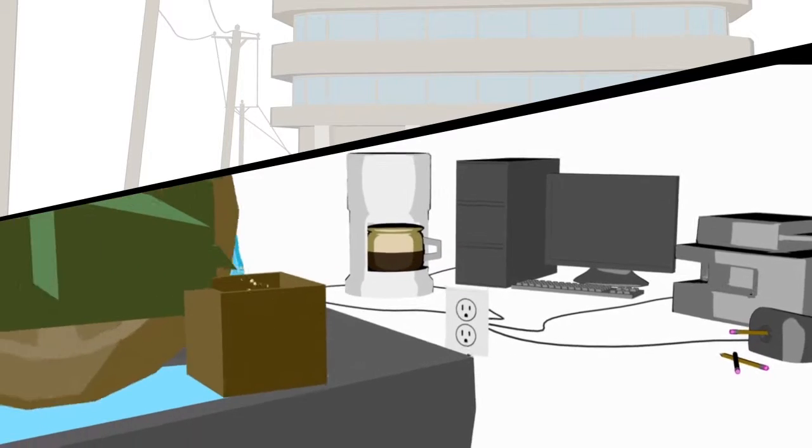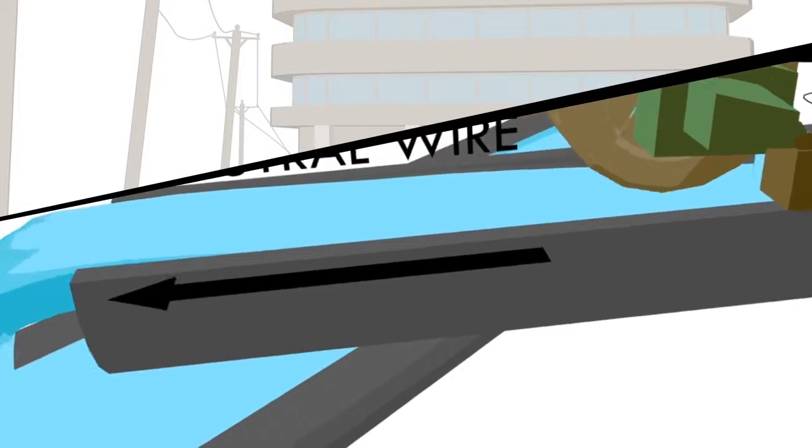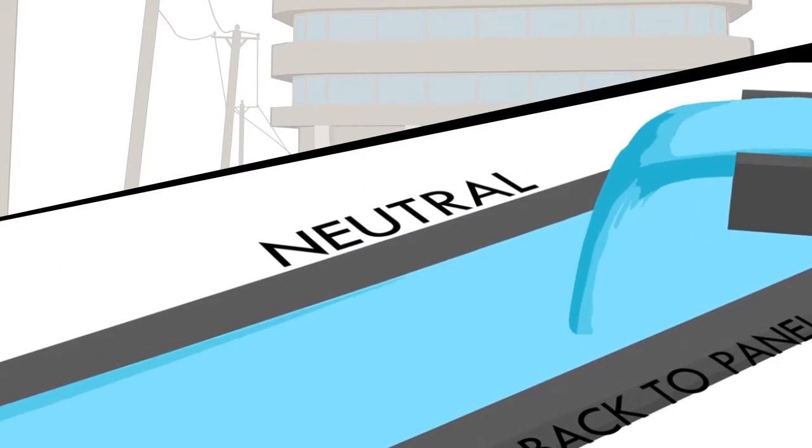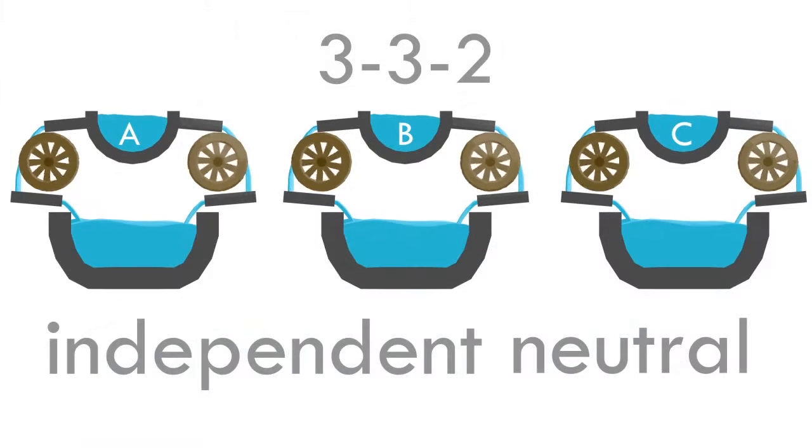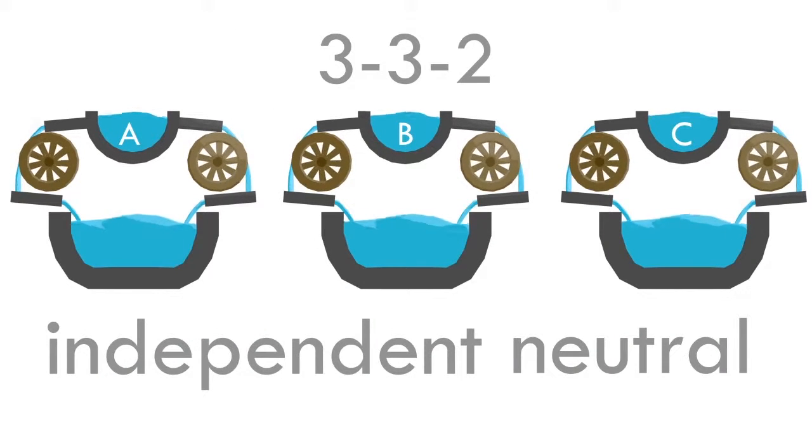For a circuit to be complete, there needs to be a neutral wire that is a return path back to the convenience panel. It can return in one of two ways. Through an independent neutral, which matches one for one with each phase. This is typically an eight-wire system.